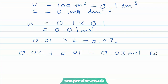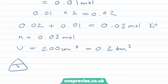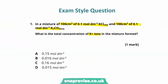We were asked to work out the concentration. The number of moles is 0.03 moles. The total volume is 200 centimetres cubed (0.2 dm³, not 0.02). So concentration equals number of moles divided by volume: 0.03 divided by 0.2 gives 0.15 moles per decimetre cubed. Going back to our question, the answer is A: 0.15 moles per decimetre cubed.